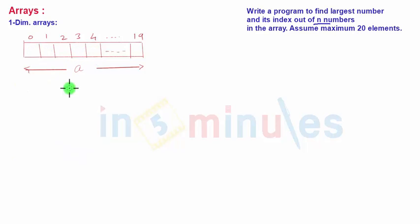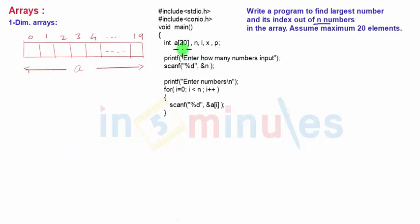Okay, now let's proceed with the program. Our program starts with defining an array of size 20. Then there is variable n to know how many numbers to process, i as a looping variable, x to store the largest number, and p to store the index of the largest number. All are integers because it's an array of integers.